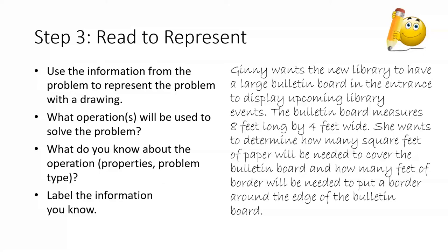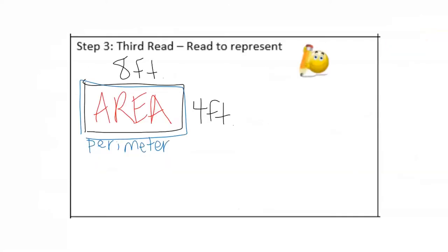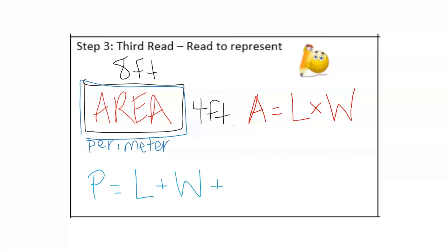To find how many square feet of paper are needed to cover the bulletin board, I need to calculate the area. I can represent that with the equation: Area = length × width. To find how many feet of border are needed around the edge, I need to calculate perimeter. I can use the formula: P = length + width + length + width, because to find the perimeter I need to add all of the side lengths.